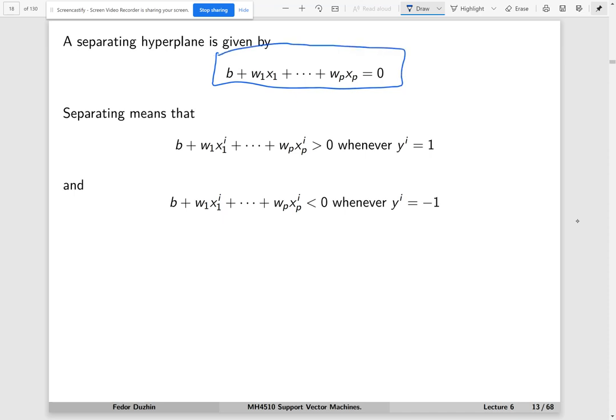This is precisely what separating means. On the hyperplane, we have the equality equals 0. Then on one side is positive, on the other side is negative. Putting it together, we get this condition.